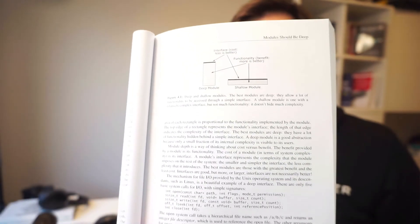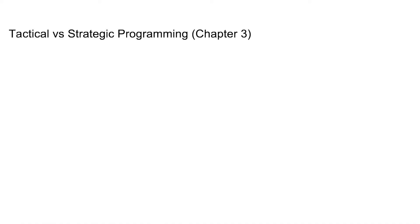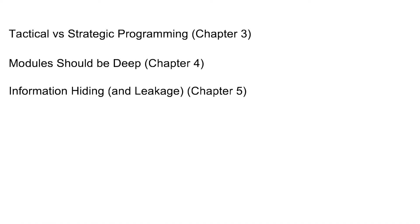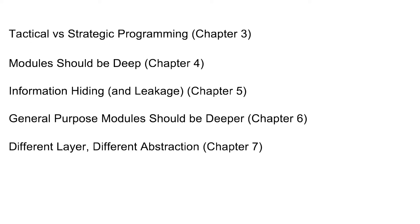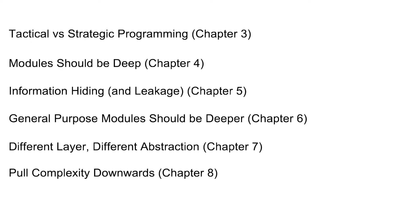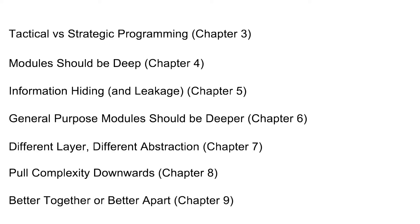The second thing I liked about the book is how it gives a fresh and simple look on architecture. It's not a book filled with complex diagrams. The book is filled with simple ideas and observations, but these ideas compound into something more powerful. In the first half of the book, each chapter introduces an idea on software design and how to manage complexity: tactical versus strategic programming, modules should be deep, information hiding and leakage, general purpose models are deeper, different layer different abstraction, pull complexity downwards, better together or better apart. Each of these chapters talks about a simple approach to reduce complexity.